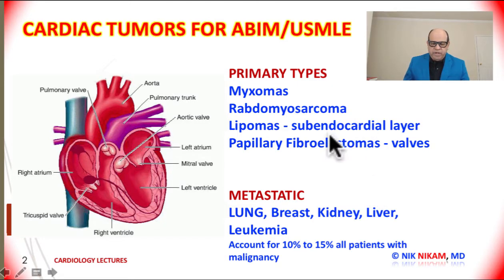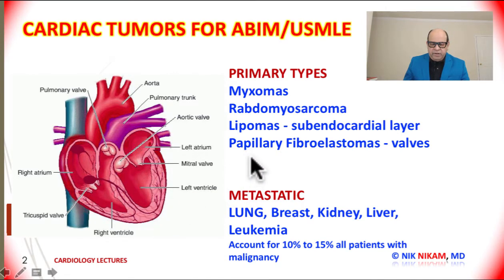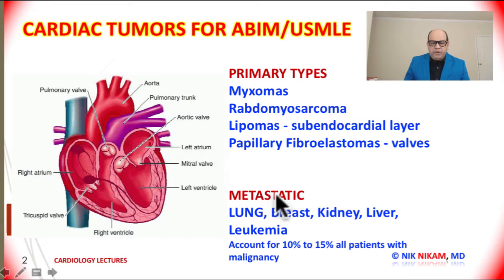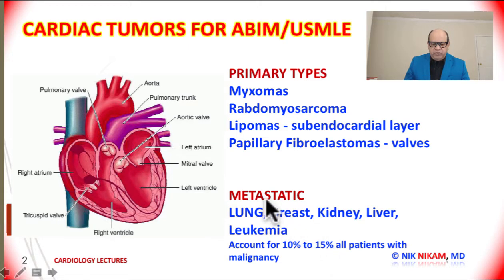The other two types we may encounter are lipomas, which predominantly occur in the subendocardial region just underneath the endocardial layer, and papillary fibroelastomas, which are in close proximity to the heart valves. On the other hand, metastatic tumors can arise from a variety of primary sources such as lung, breast, kidney, liver, or lymphomas. Metastatic cancer to the heart accounts for 10 to 15% of all patients with malignancy.